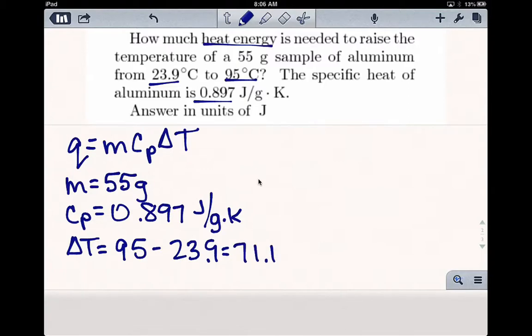So now we can just plug everything into our formula. So Q equals mass, 55, times C sub P, 0.897, times our delta T, which is 71.1.